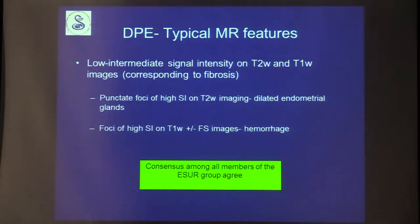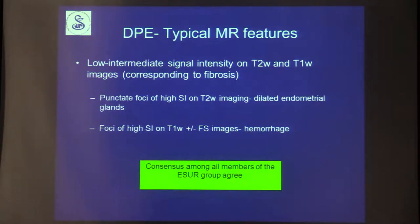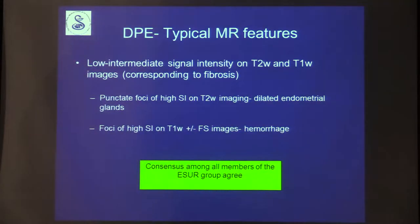There was consensus that the typical MR features of deep pelvic endometriosis are lesions with low or intermediate signal intensity on both T2 and T1-weighted images, corresponding to fibrosis. They can have punctate foci of high signal intensity on T2, representing dilated endometrial glands, and high signal intensity foci on T1-weighted images correlating to hemorrhage.